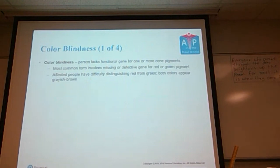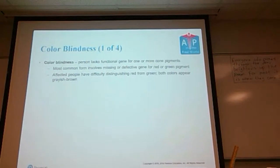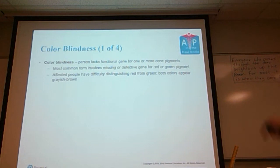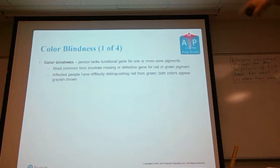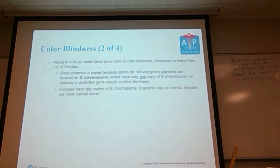Colorblindness — people who lack the functional gene for one or more common pigments. The most common form involves missing or defective genes for red or green pigment; affected people have difficulty distinguishing red from green, and both colors appear as a grayish brown. This is why traffic lights are universally hung with green in one position and red in the other — people with red-green colorblindness learn that when the one on top is lit, you stop, and when the one on the bottom is lit, you go. About 8 to 10 percent of males have some form of colorblindness, compared to fewer than 1 percent of females.